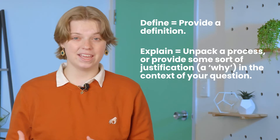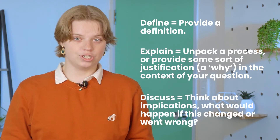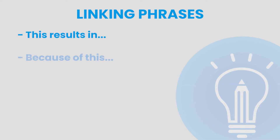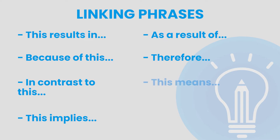When you're looking at exam questions, you get nice big bullet-pointed lists with information you need to include. These often begin with 'define', 'explain', or 'discuss'. Learning the difference as to what is expected depending on what your bullet point starts with will help you write super coherent answers. 'Define' is provide a definition. 'Explain' is unpacking a process or providing some justification — a 'why' in the context of your question. And 'discuss' is think about the implications: what would happen if this changed or went wrong? To pull all these together, you can use linking phrases such as: 'this results in', 'because of this', 'in contrast to this', 'this implies', 'as a result of', 'therefore', 'this means', and 'if this did not occur then...'. This is a great aid in helping you structure your answers in a way that makes sense — starting small and then zooming out to examine the bigger picture.